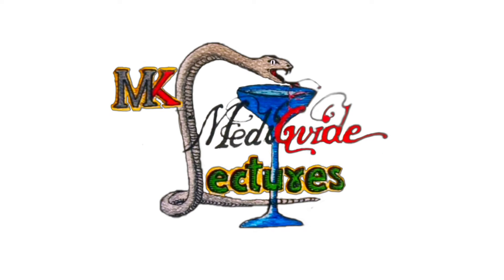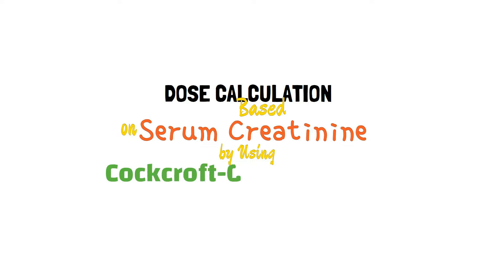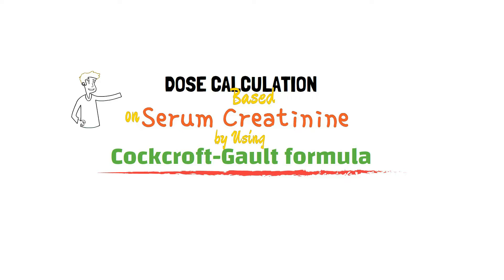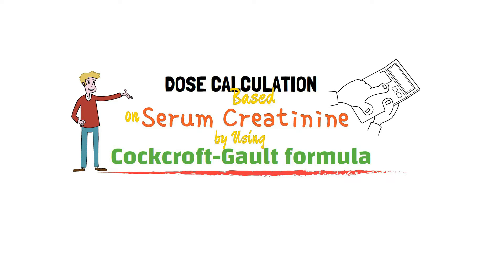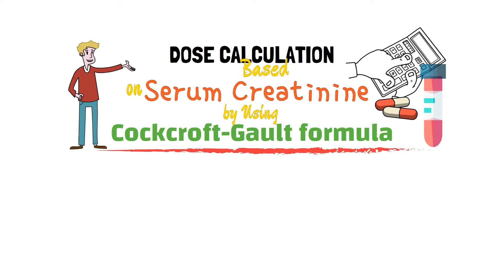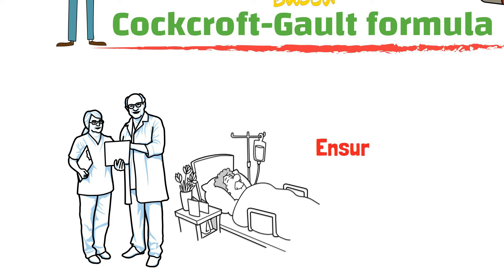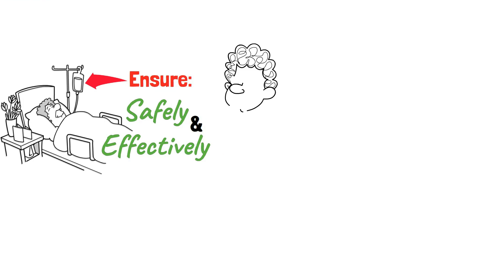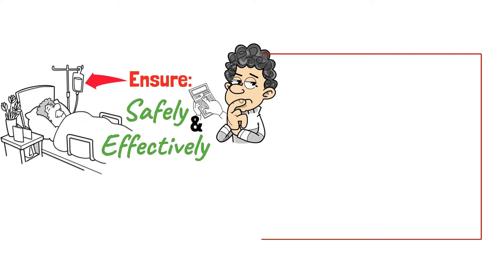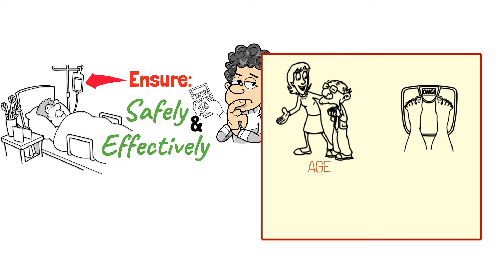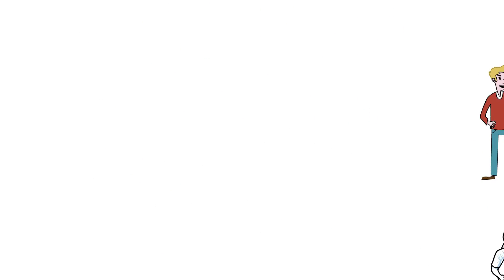Hello and welcome to today's lecture on dose calculation based on serum creatinine levels using the Cockcroft-Gault formula. In this video I will be explaining how to use this formula to calculate the appropriate dose of medication for a patient based on their serum creatinine level. As a healthcare professional, one of the most important tasks is to ensure that a patient receives medication safely and effectively, and to calculate the appropriate dose based on individual factors such as age, weight, and renal function.